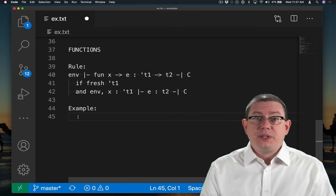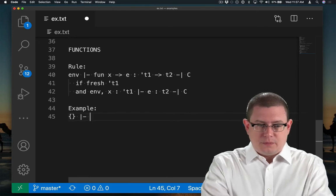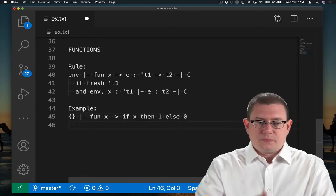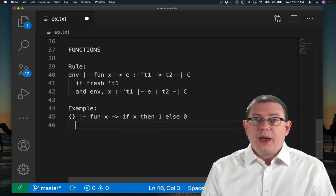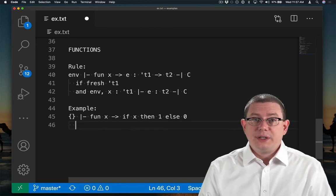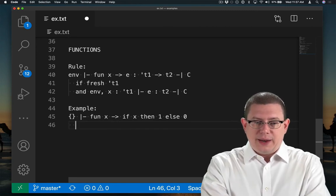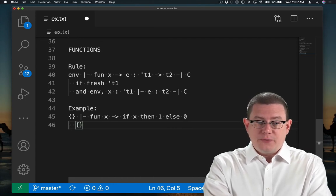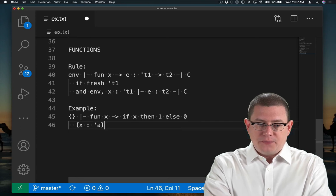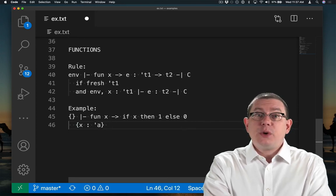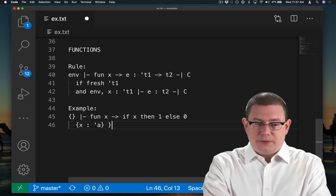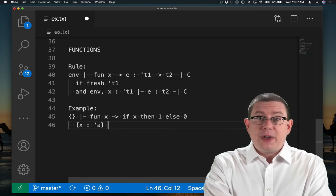Let's try an example with an anonymous function. The type of the variable x will be represented by a new type variable. So let's call that alpha. So we want to continue doing inference in an environment that maps x to alpha. And we need to infer the type, then, of the body of the function, which is itself an if expression.